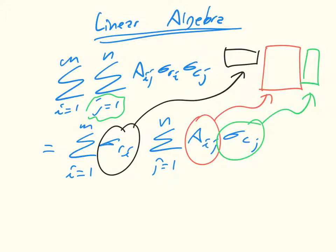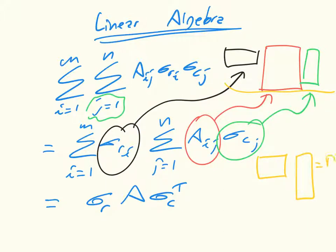And so, in fact, this is just equal to sigma r times a times sigma c transpose. Indeed, this thing here will just collapse into a column vector, and so this just becomes this times this, which becomes a single scalar, which is what this will be.